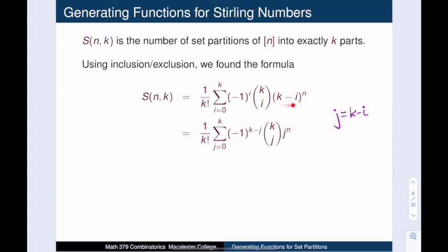The (k minus i) to the n term simplifies to j to the n. Meanwhile, the k choose i term becomes k choose j. That's because k choose i equals k choose (k minus i), which of course is just k choose j. Finally, we also update the exponent of the negative 1 term. Now that is k minus j.